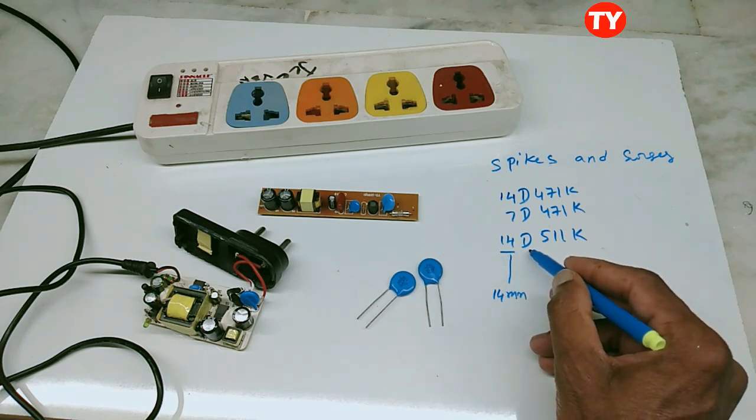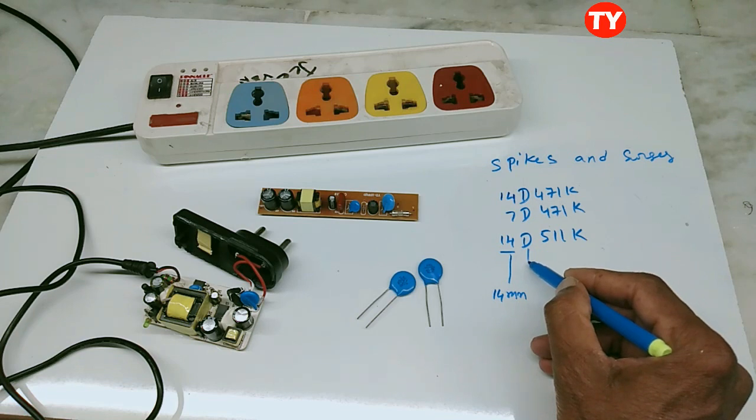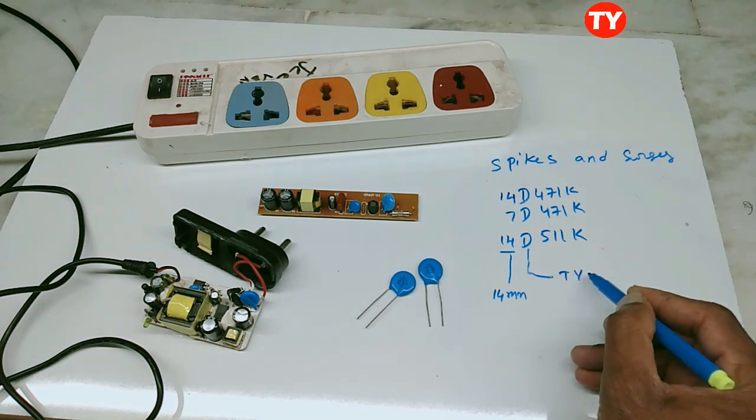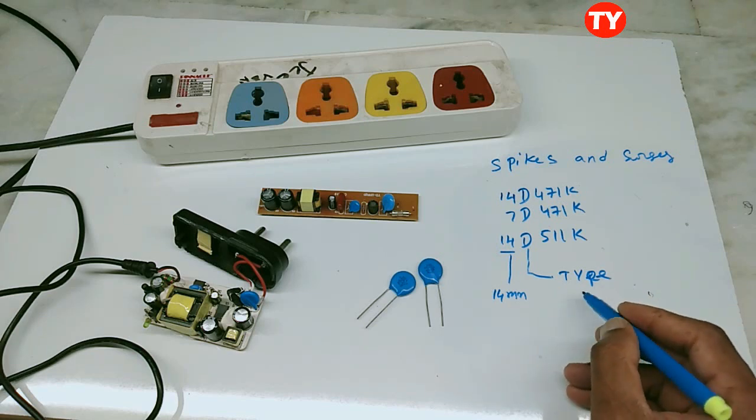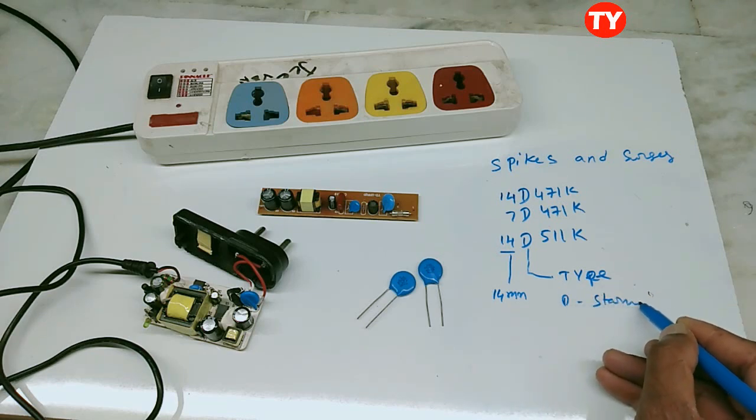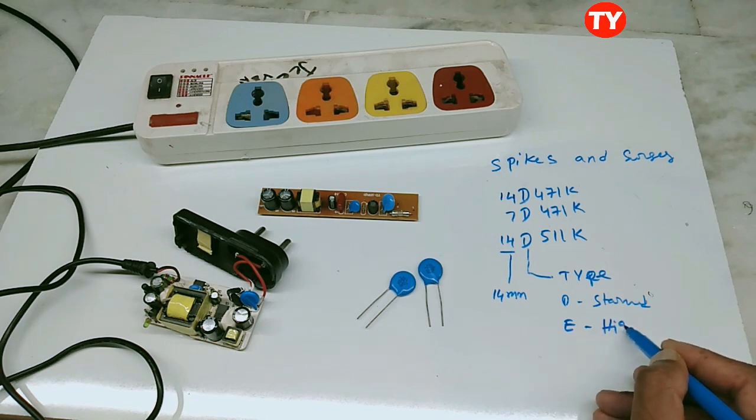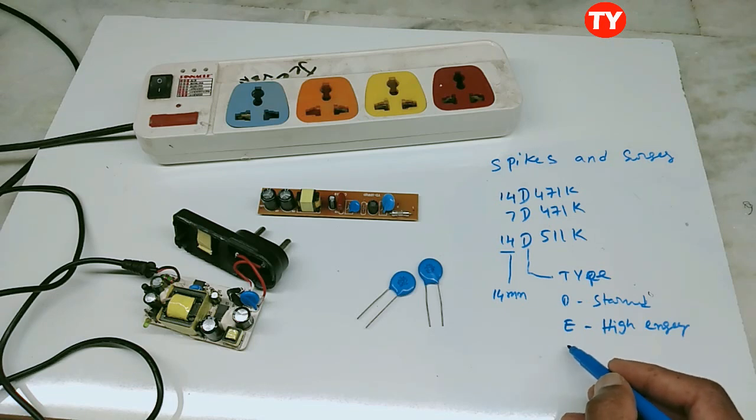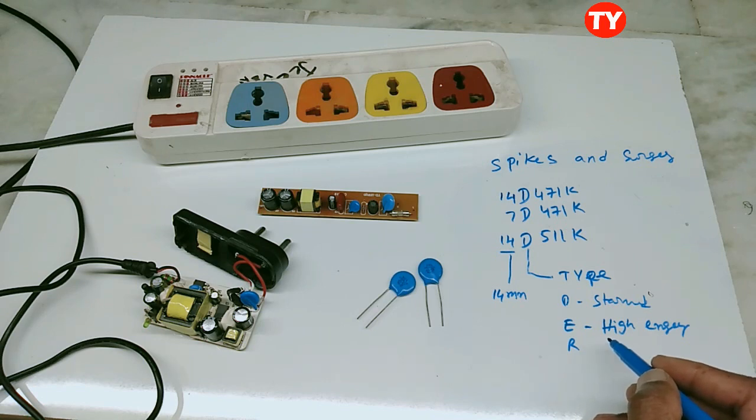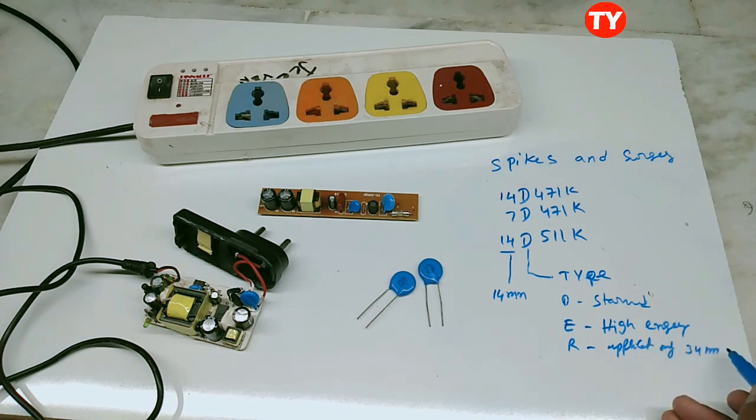Second designation: Type D for standard, E for high efficiency or high energy, O for applicable only 34 millimeter type.